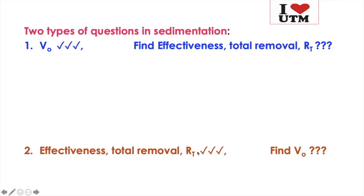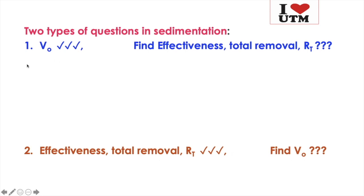The second type of question gives you the effectiveness, R_T, or total removal — they are all the same — and asks you to find the v_naught of the tank. For example, you may be asked to design a sedimentation tank that can remove 80 percent of the particles, and you need to find what the overflow rate v_naught should be.